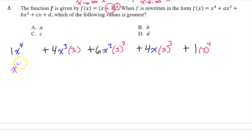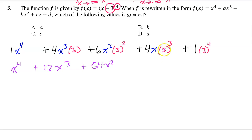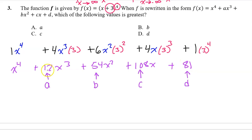The first term simplifies to x to the fourth power. 3 times 4 is 12, so we have plus 12x to the third power. 3 squared is 9, and 6 times 9 is 54, so we have plus 54x squared. 3 to the third power is 27, and 4 times 27 is 108, so we have 108x. And 3 to the fourth power is 81 — you should definitely memorize that. So a is 12, b is 54, c is 108, and d is 81. The value of c is the greatest, and the answer is C.